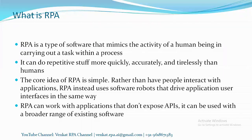RPA is a type of software robot that mimics the activity of a human being carrying out a task within a process. Whatever a human does sitting in front of a computer — opening applications, typing, searching Google, going to Amazon, verifying data across applications — the software robot will do the same. It can do repetitive tasks more quickly, accurately, and tirelessly than humans.